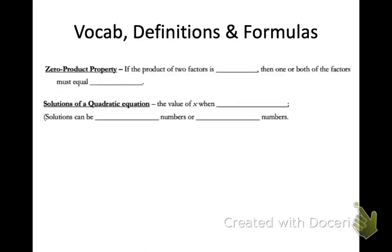We're going to do the same method over and over, so pay attention and try to recognize the patterns. Let's get down a couple of definitions. We're going to be working with the zero product property: if the product of two factors multiplying together is zero, then one or both of the factors must equal zero. We're going to use that logical thought every time we solve one of these problems.